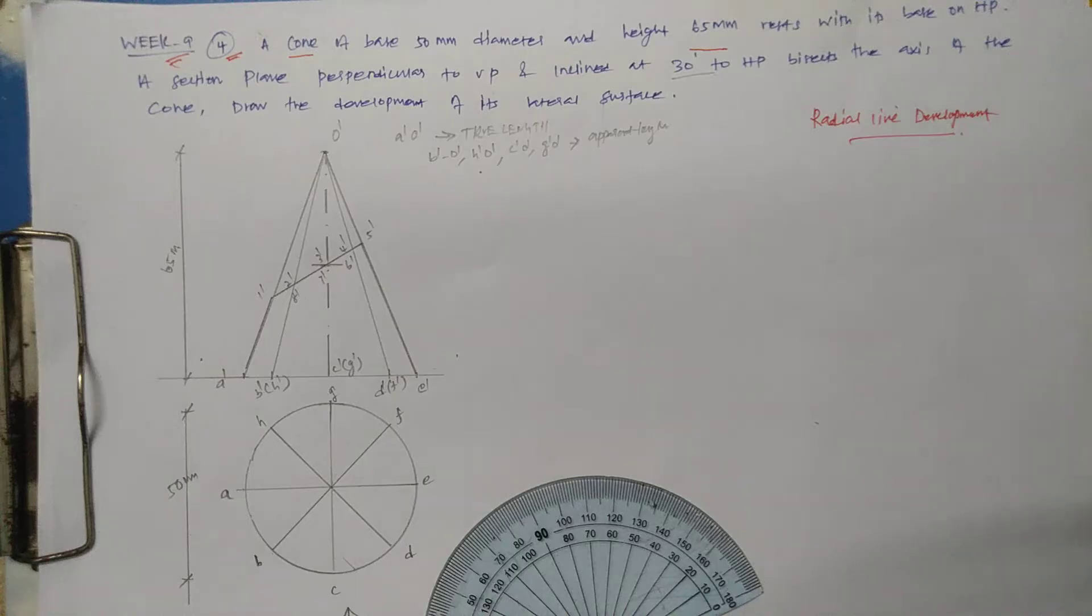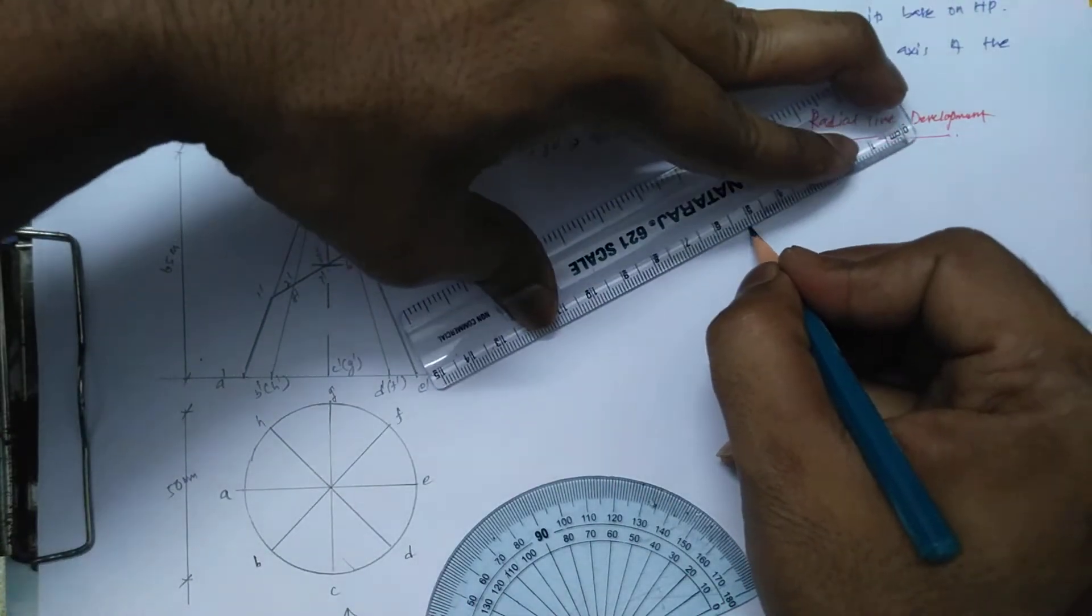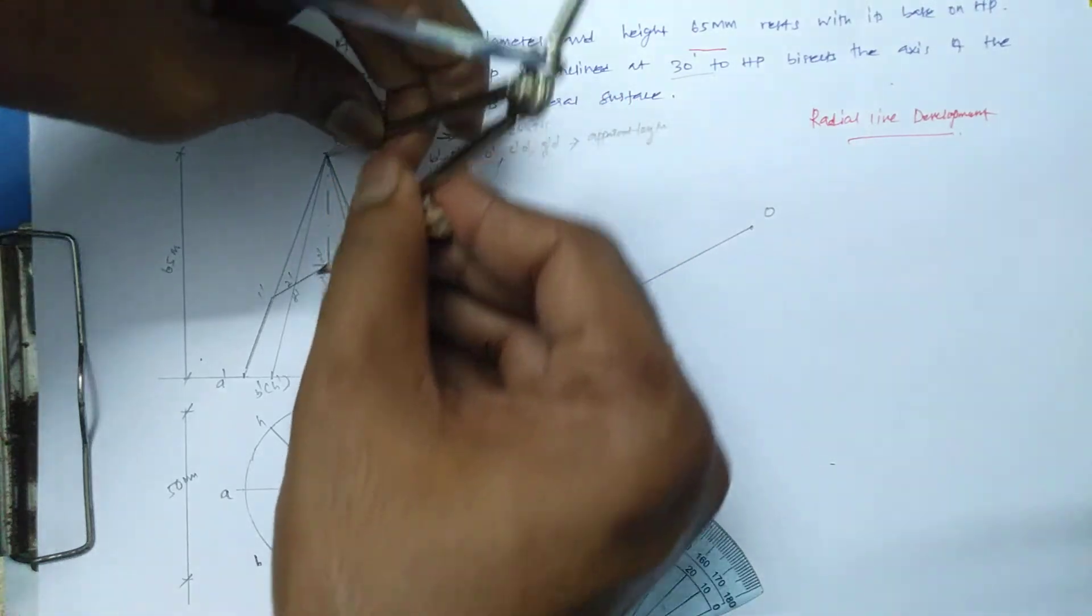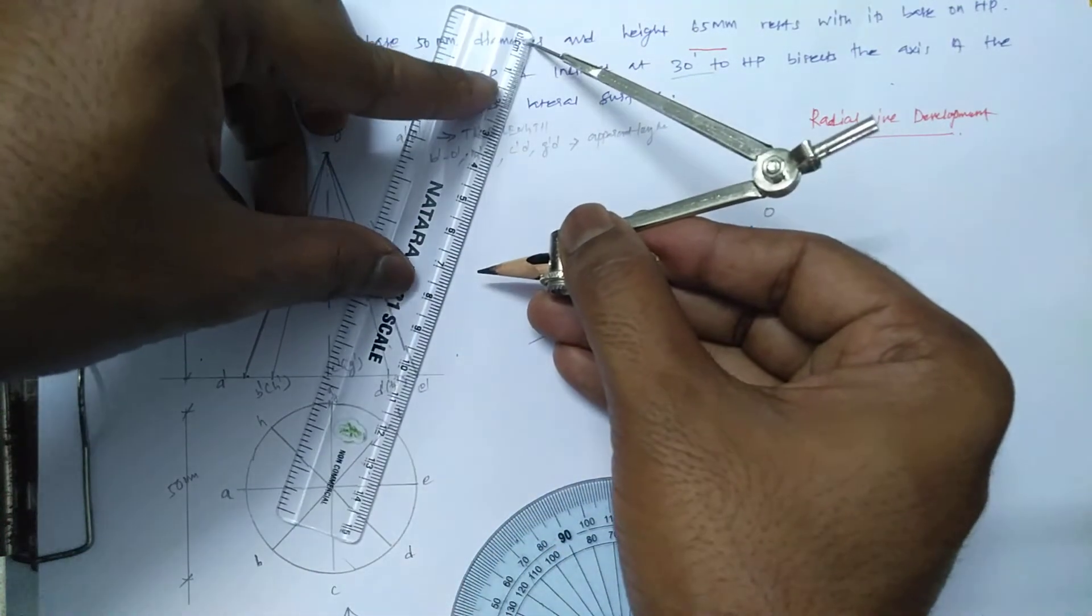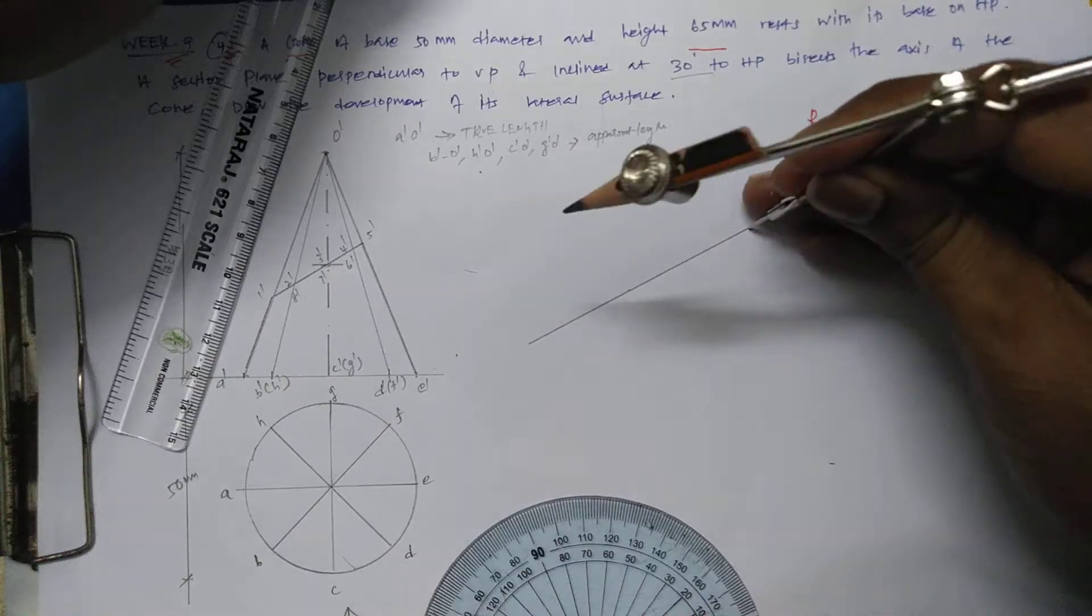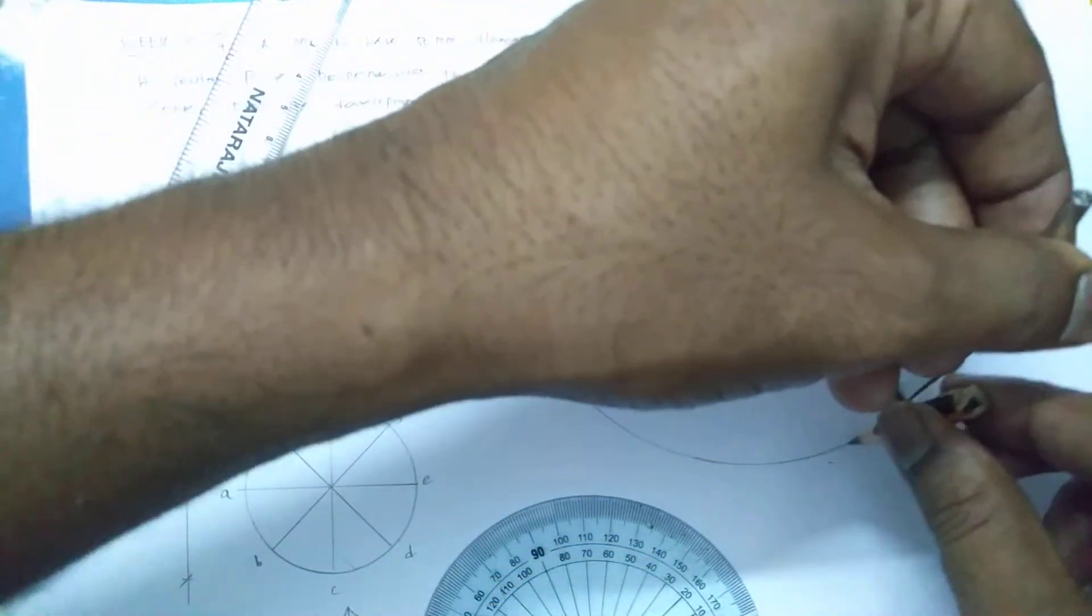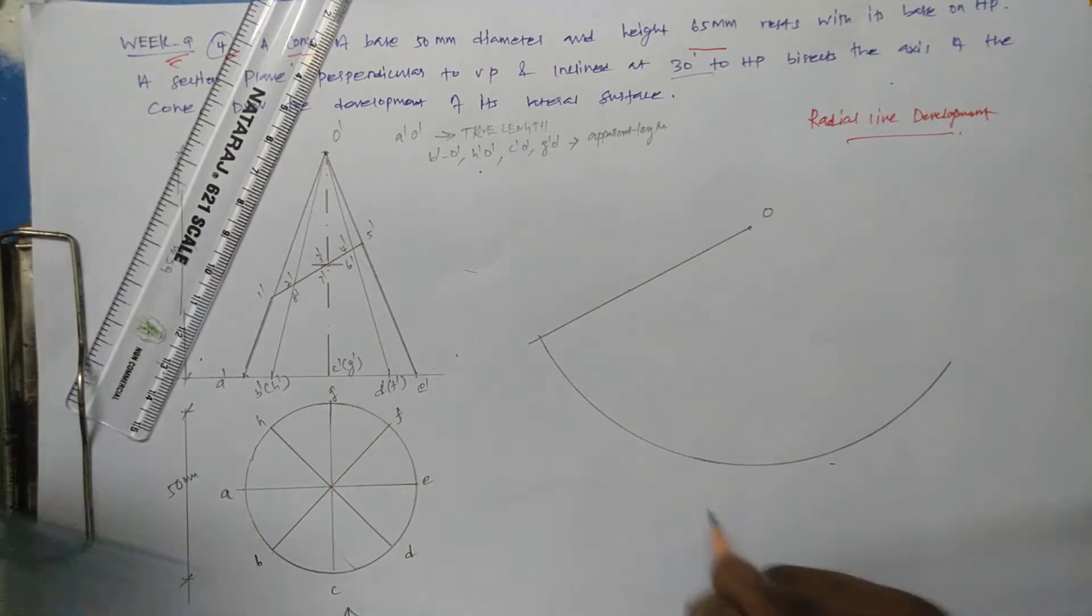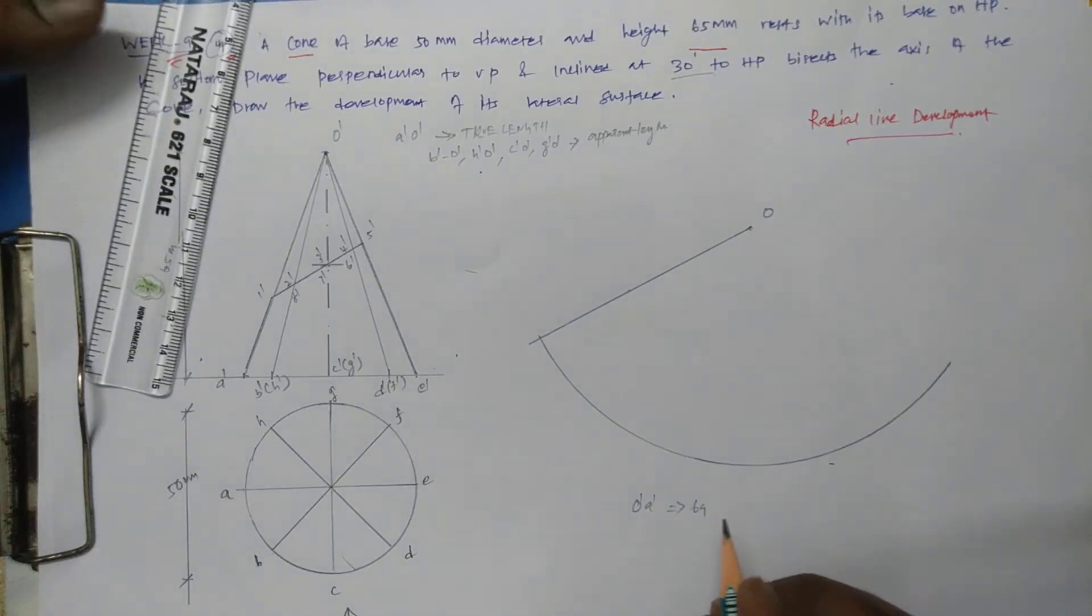Let us finish the radial development. Let us choose one point that is O. From here we draw one line anywhere. This distance O to A we need to check - this must be the true length of the slanting edge. It is almost this distance, 69. Let us keep O as the center, 69 as the radius. But we don't know how to end this one.